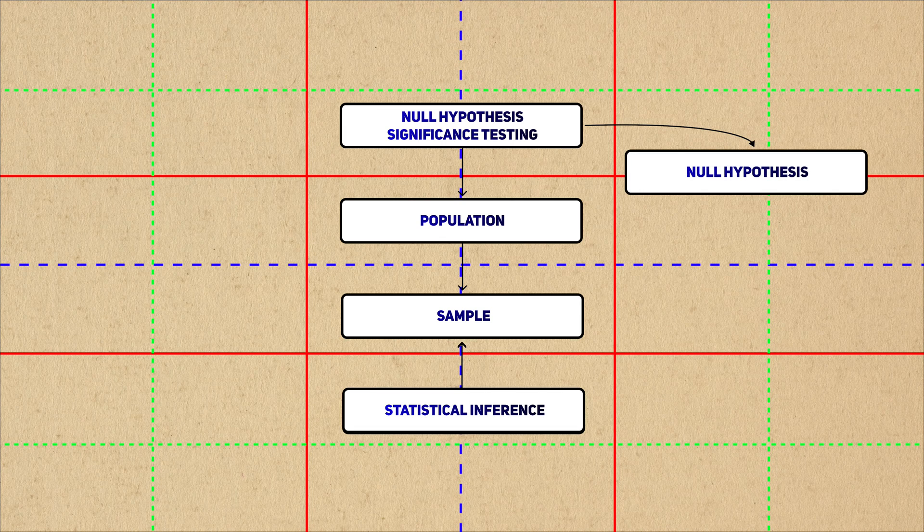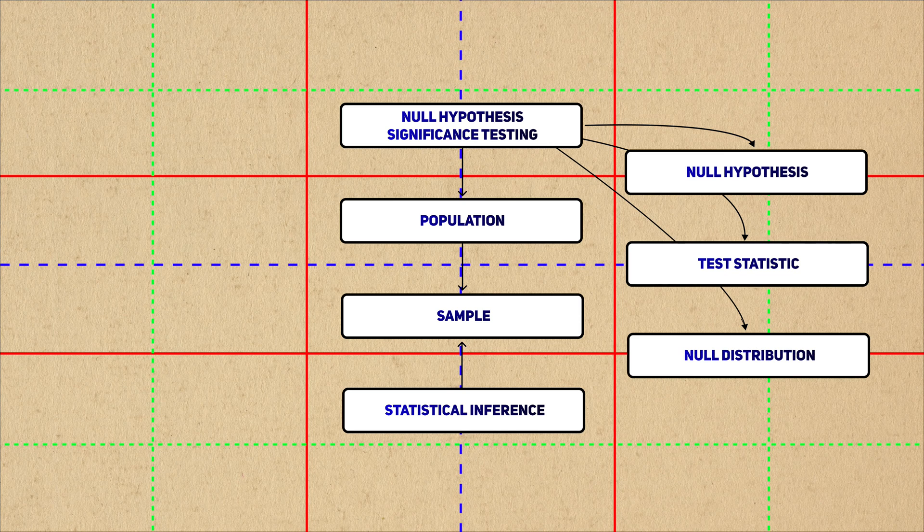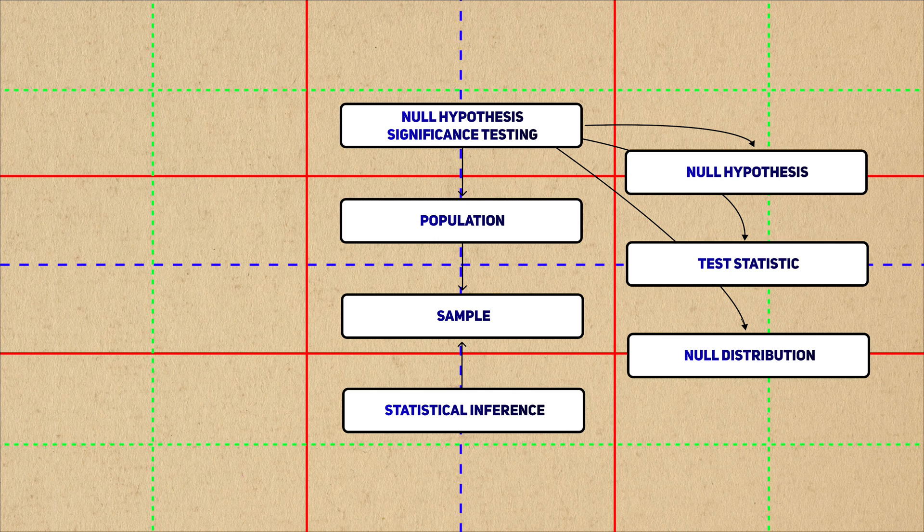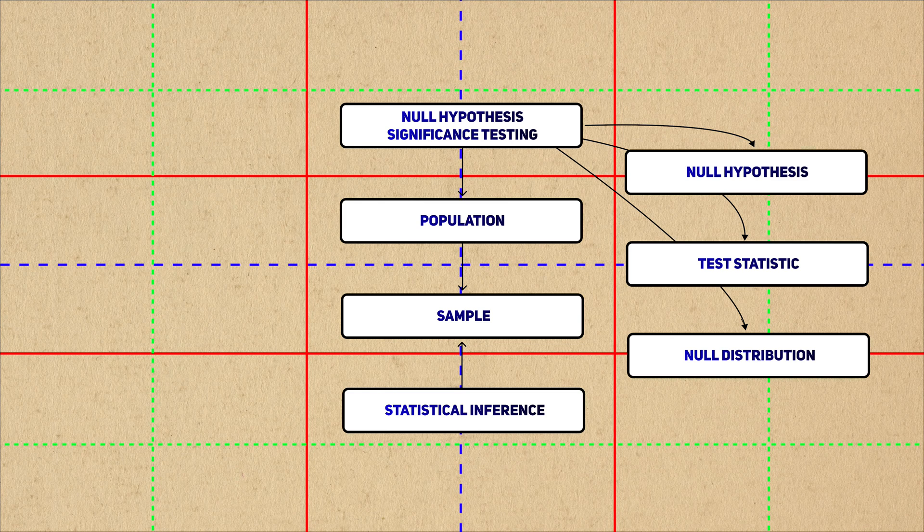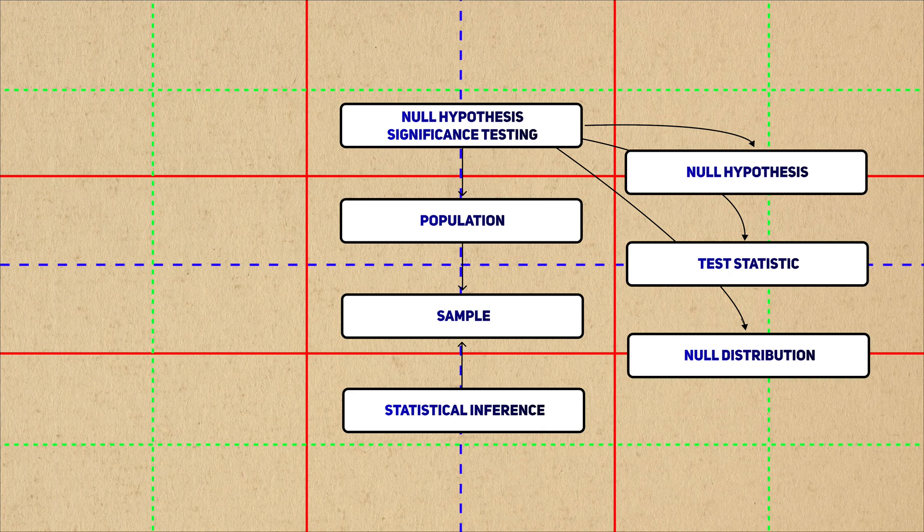The null hypothesis significance testing framework requires four things: a population parameter, a null hypothesis, a test statistic, and a distribution of the statistic assuming the null hypothesis is true. The key idea behind Fisher's idea of statistical significance is that you assume the null hypothesis to be true, collect data, and see how likely or unlikely the statistic is under the assumption.